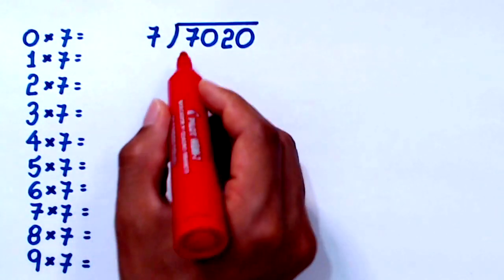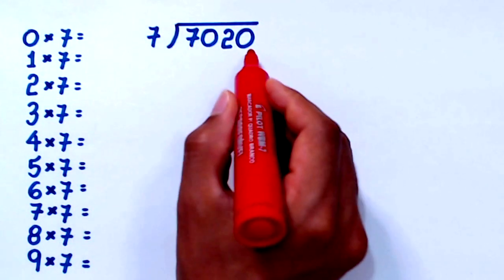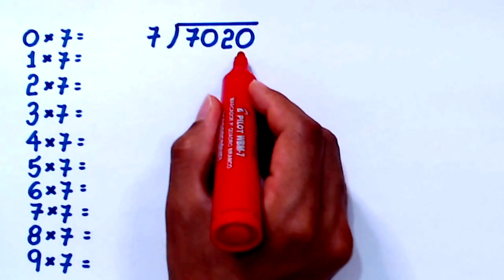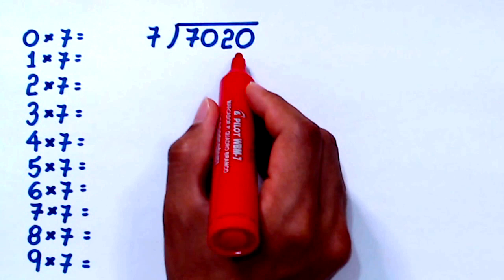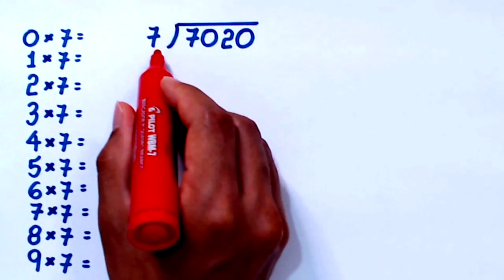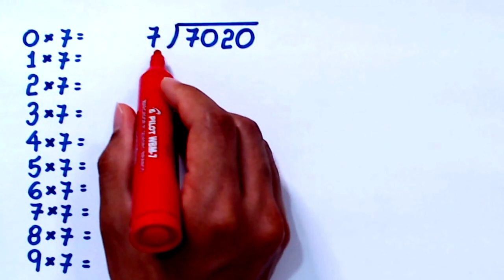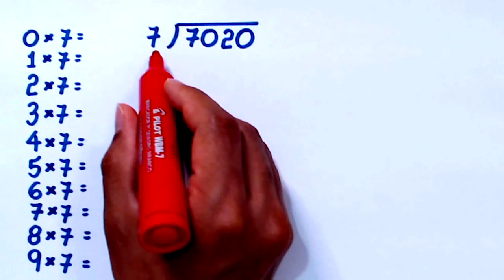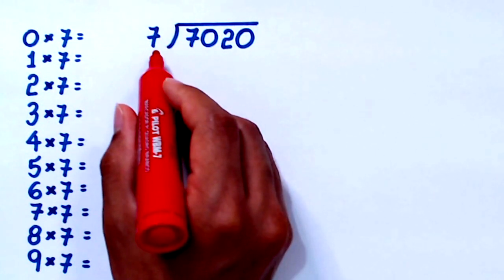Here we have 7020. This is the dividend — the value we will divide into 7 equal parts. 7 is the divisor. It's good that we know the multiplication table of the divisor before we start the division.